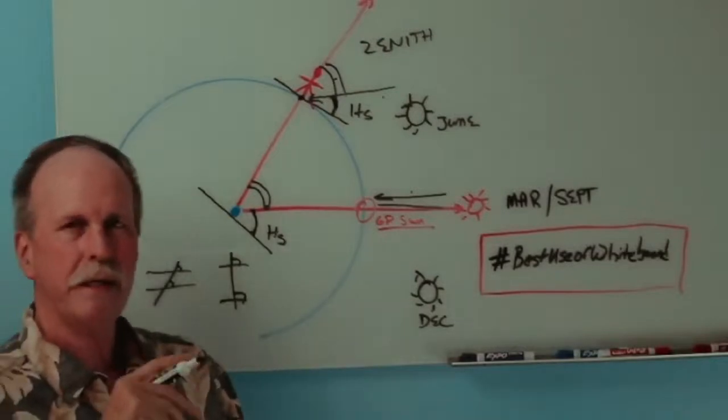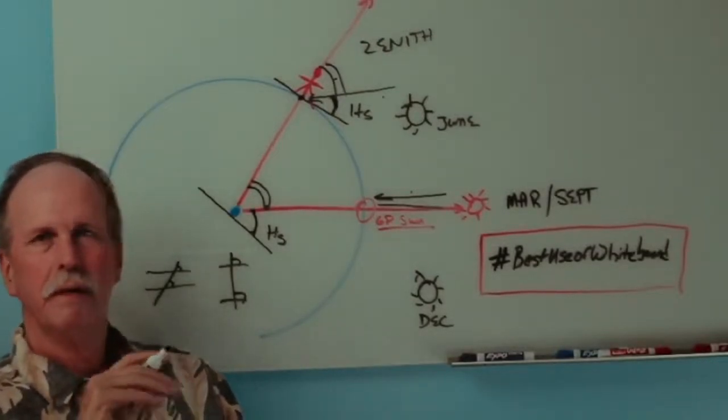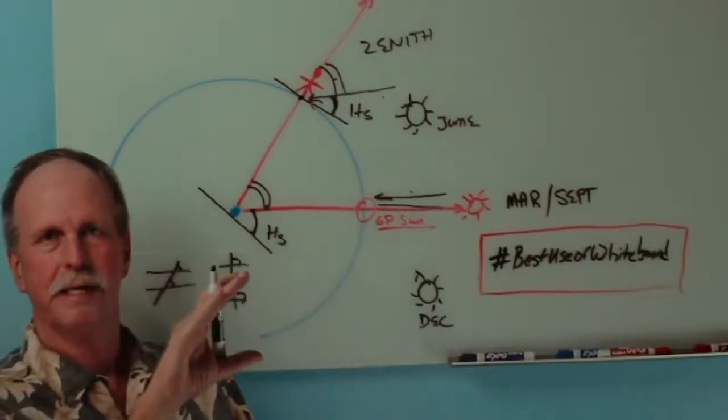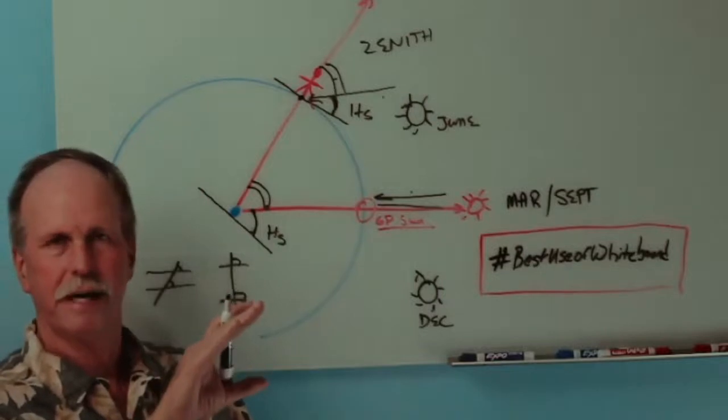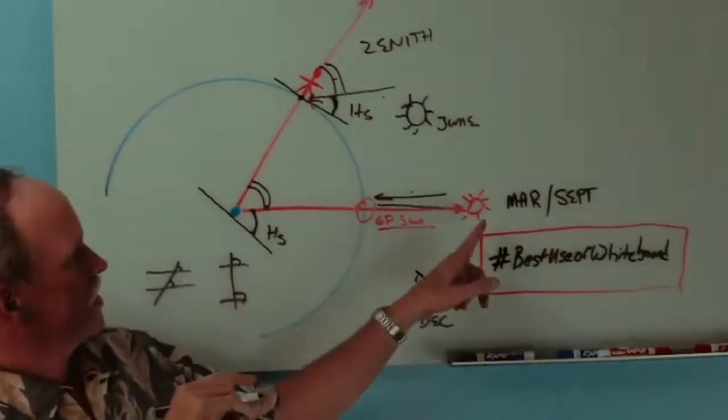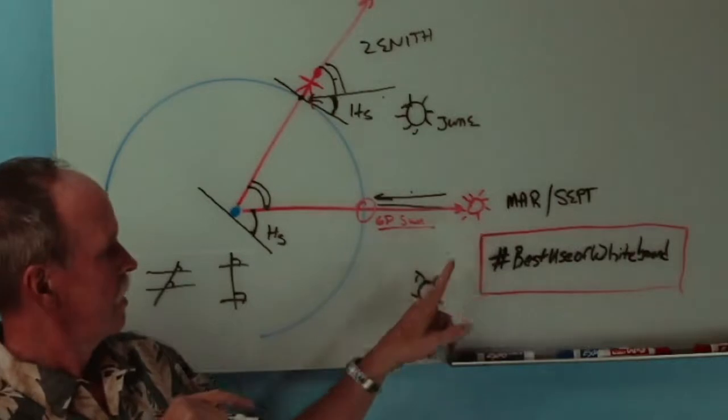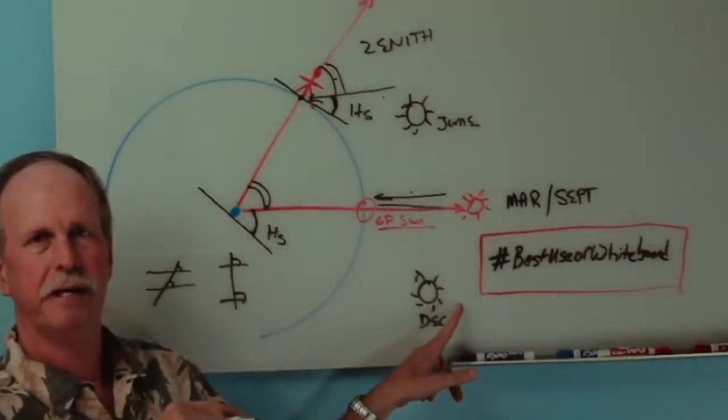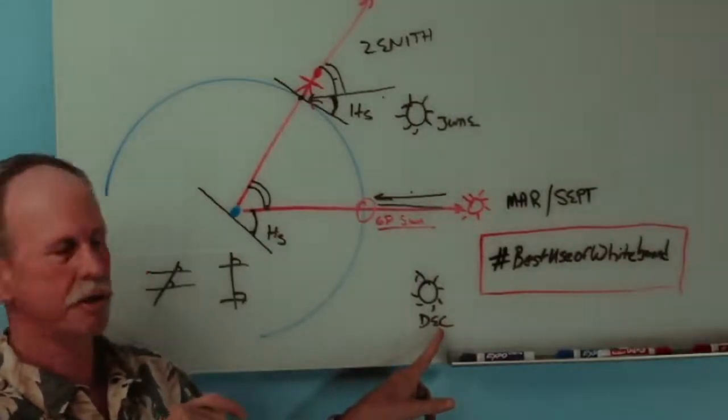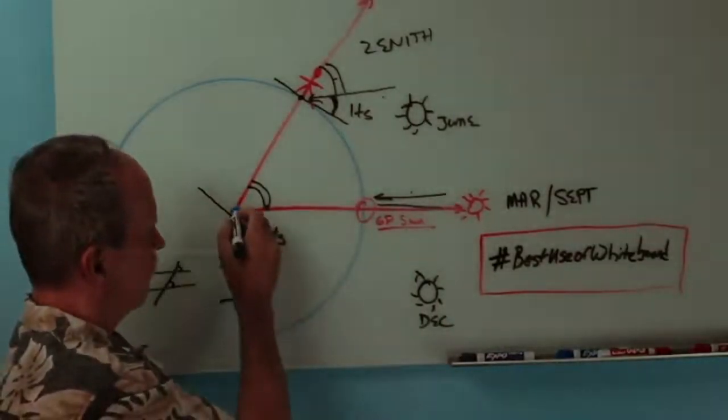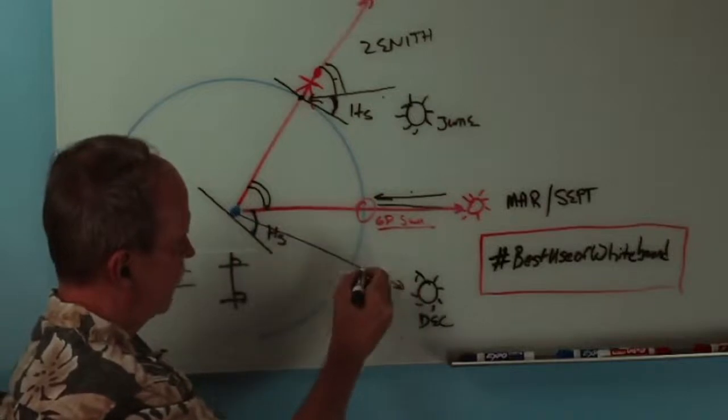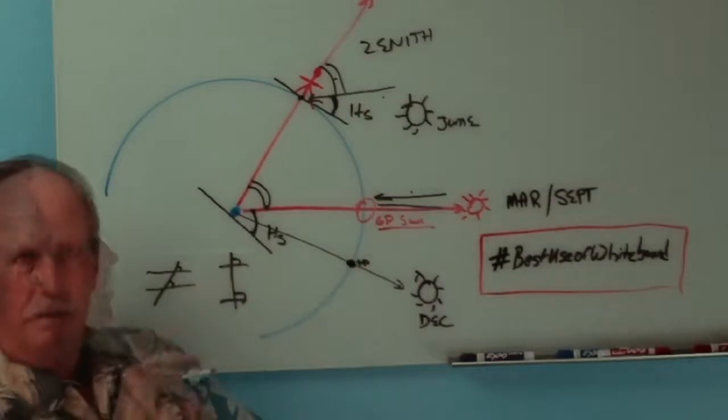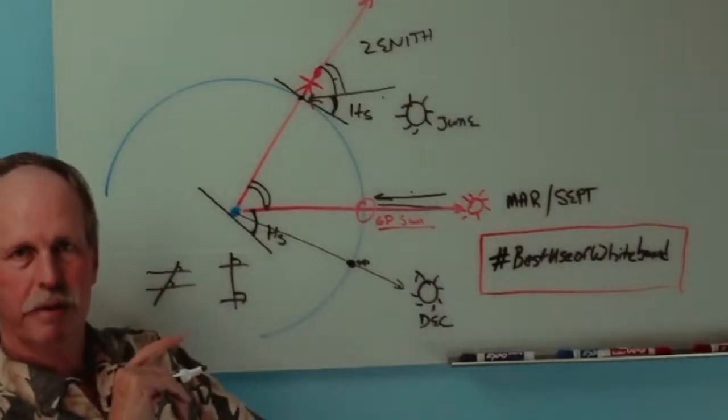Now, there's one more thing that we need to understand about the measurement of latitude. With our sextant, we measure the distance, the angle, between a celestial body like the Sun and the horizon. What if the Sun's not directly over the equator? What if it's down here at 23 and a half degrees south latitude, which is where it would be at the December solstice? So, that would be the new geographic position of the Sun.